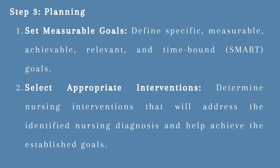Step 3: Planning. Set measurable SMART goals — specific, measurable, achievable, relevant, and time-bound. For instance, the patient will void at least 300 milliliters of urine every 4 hours, or the patient's pain level will be reduced to a score of 3 or less on a pain scale of 0 to 10 within 24 hours. Select appropriate interventions such as administering prescribed medications for pain relief and bladder relaxation, monitoring intake and output including bladder scanning, and encouraging the patient to use relaxation techniques to aid voiding.